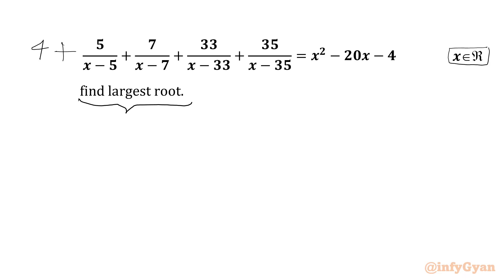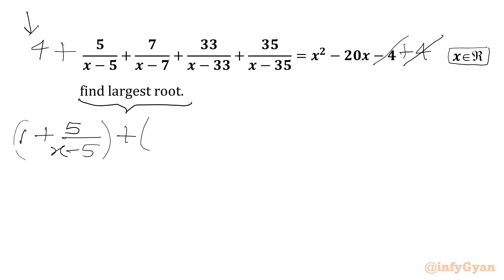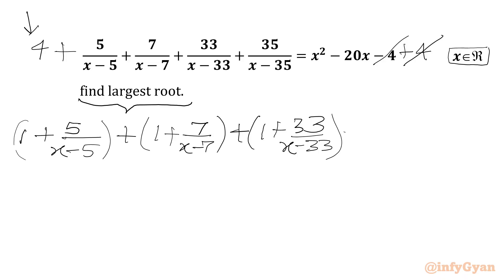We are going to add 4 to both sides, so I will cancel minus 4 and plus 4 from the RHS. We are going to split our LHS 4 as 1 plus 1 plus 1 plus 1. So we will be writing: 1 plus 5 over (x minus 5), second one 1 plus 7 over (x minus 7), third one 1 plus 33 over (x minus 33), and the fourth one 1 plus 35 over (x minus 35). And in the RHS we have x squared minus 20x.